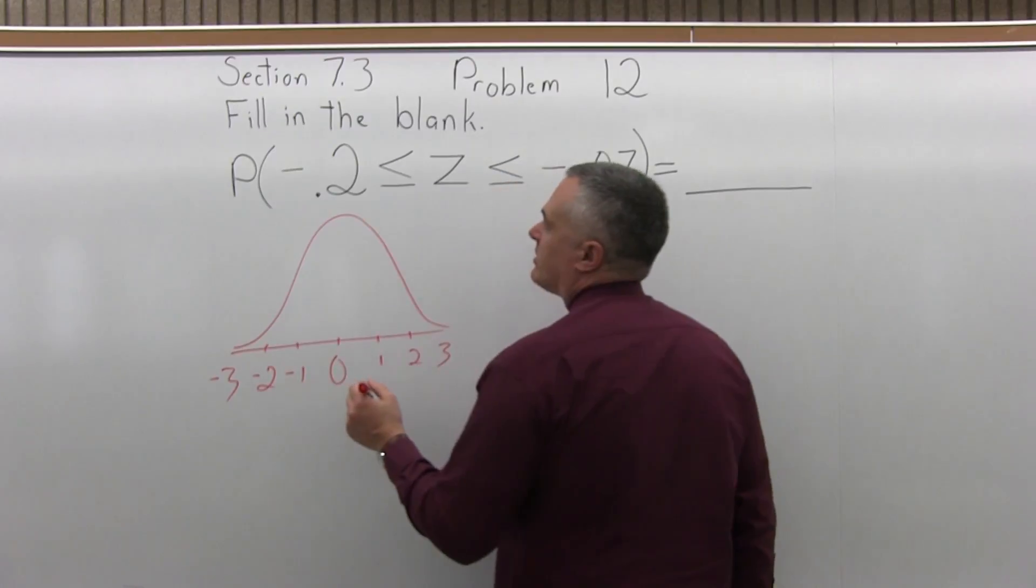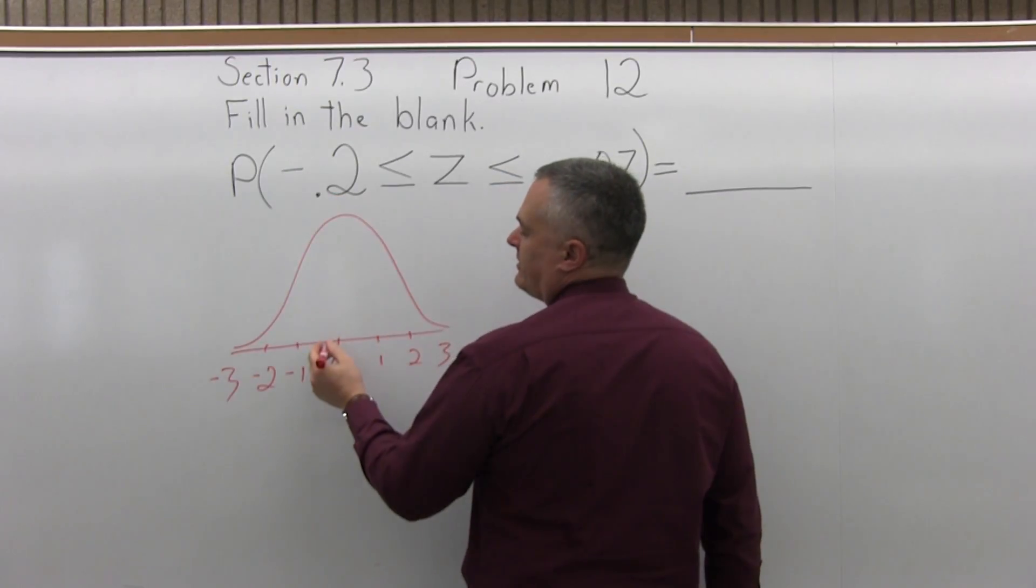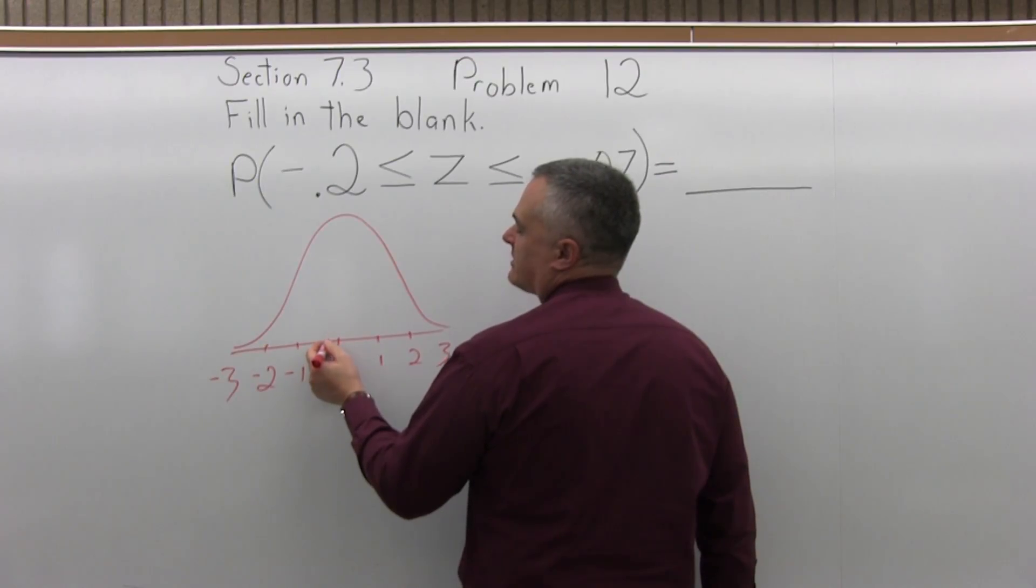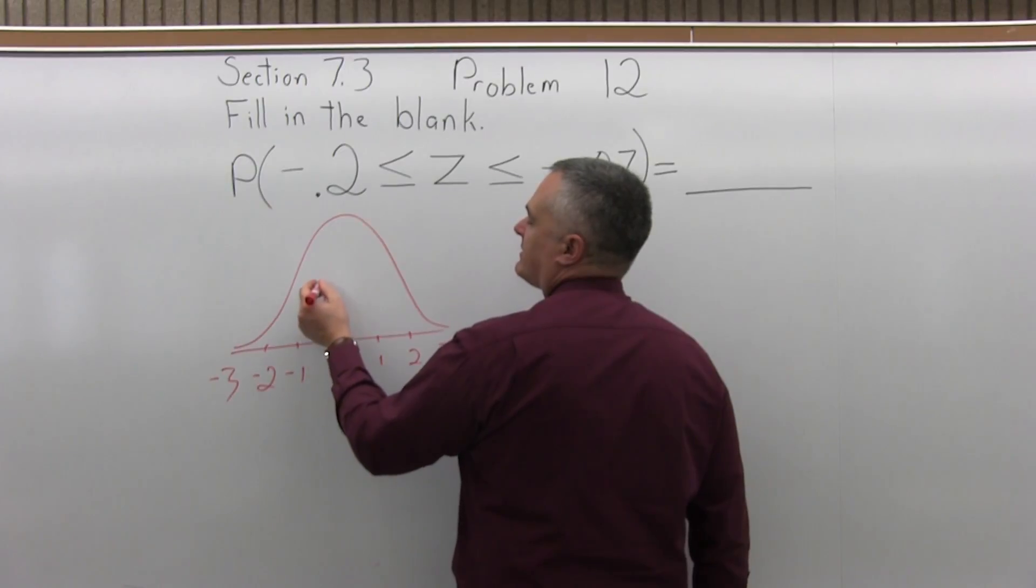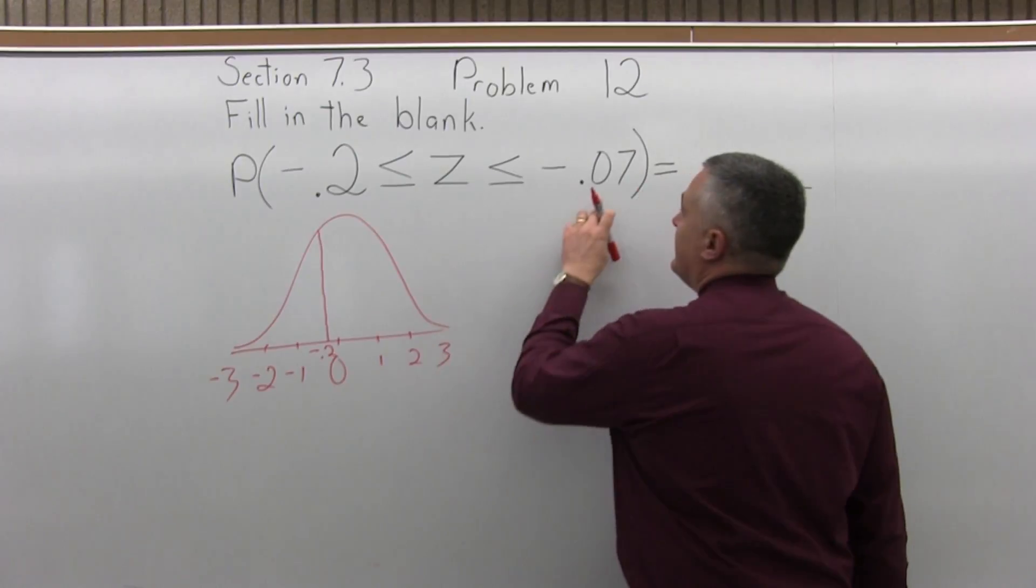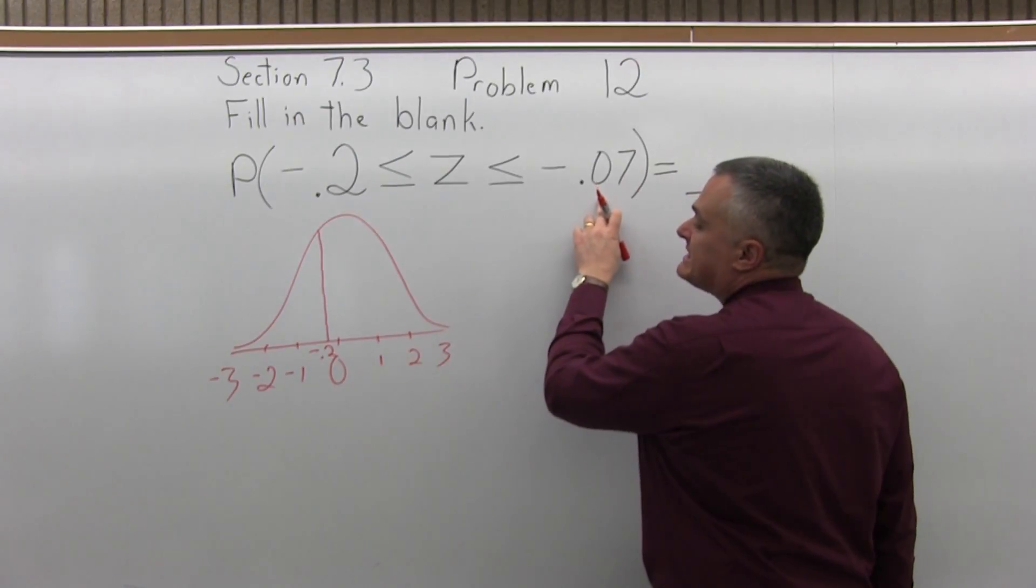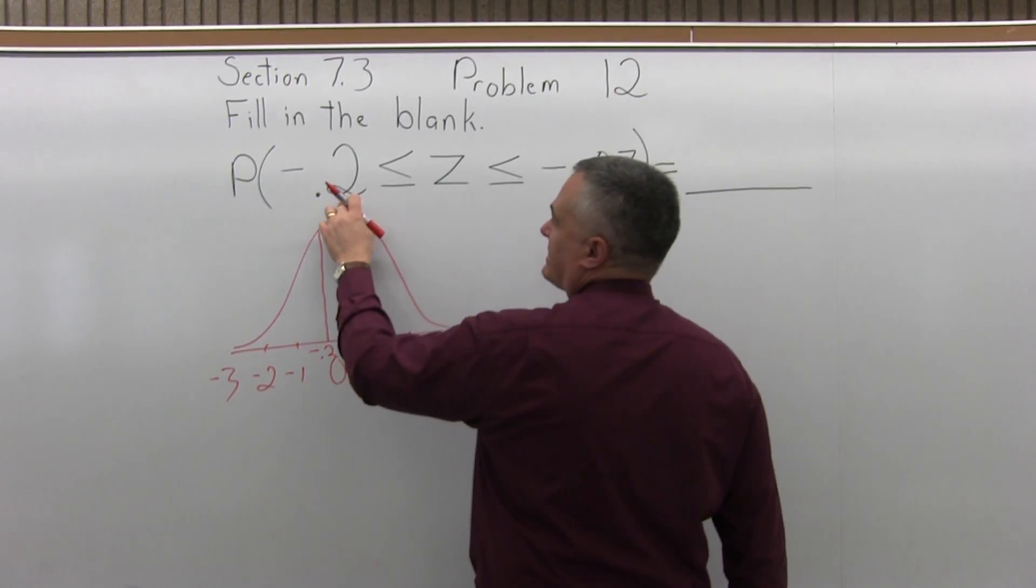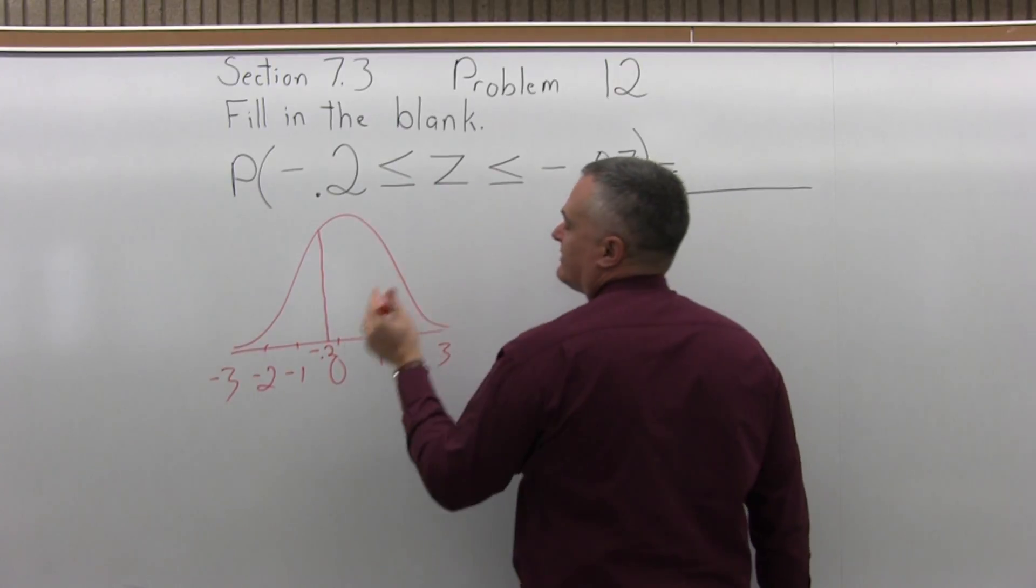So I'll set up a bell curve. Negative 0.2, so negative 0.25 is a quarter of the way between 0 and negative 1. So negative 0.2 is going to be not quite as far to the left as negative 0.25. Negative 0.2 and negative 0.07. So you can think of this as like negative 0.20, negative 0.07.